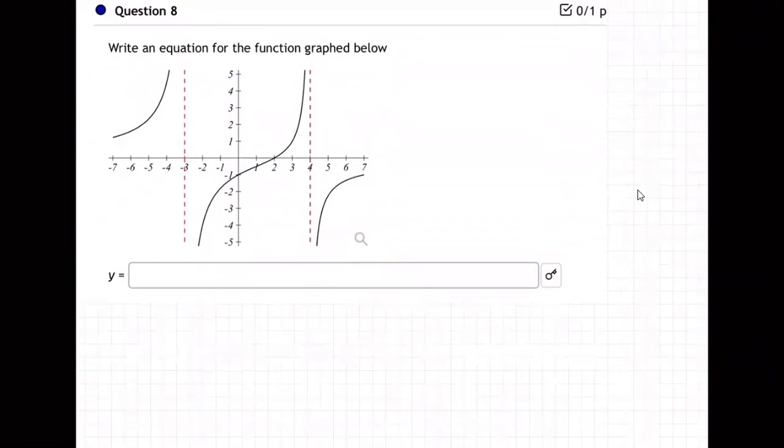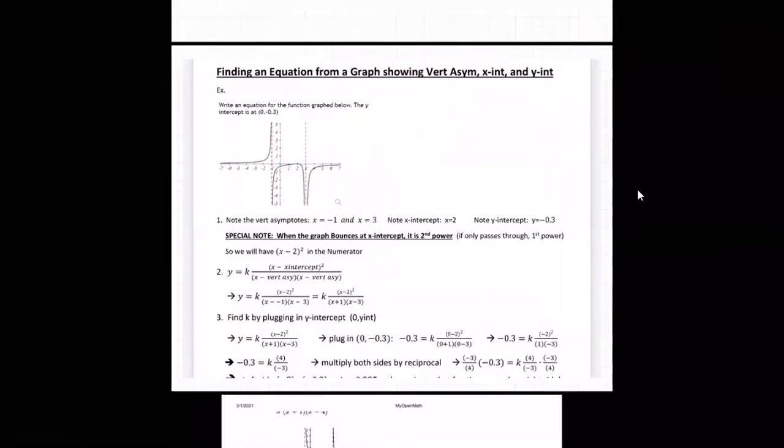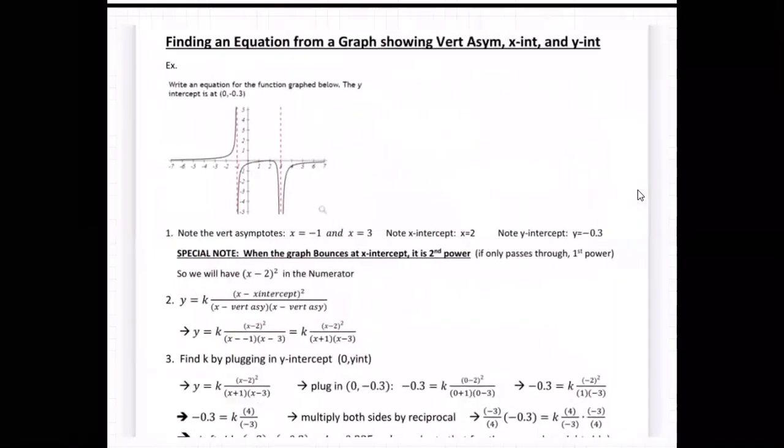Well, if you look in the notes, it tells you. Let me put them in here real quick. There they are. So the exam three notes, it says how do you find an equation from a graph? Well, step one is take note of the vertical asymptotes and the x-intercepts, and then write the equation like this.